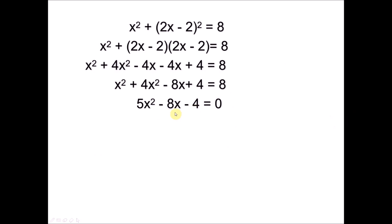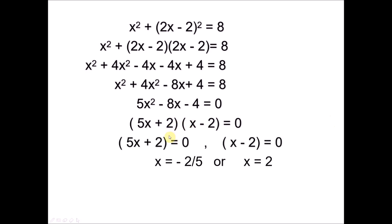We try to factorize this equation. In this case, factorization is possible. There are three ways to solve a quadratic: factorization, completing the square, or using the quadratic formula. Factorizing is the fastest here, and we get x equals negative 2 over 5, or x equals 2.